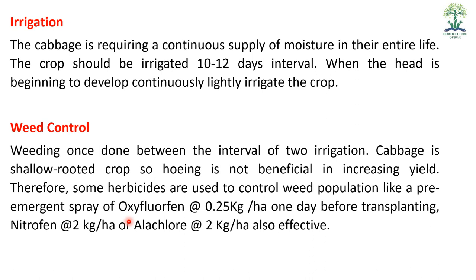Weed control: Since cabbage has shallow roots, deep weeding is not recommended. Light weeding can be done between two irrigations. Pre-emergence herbicides can also be used: oxyfluorfen at 0.25 kg/hectare (applied one day before transplanting), nitrofen at 2 kg/hectare, and alachlor — all are effective for keeping the field weed-free.